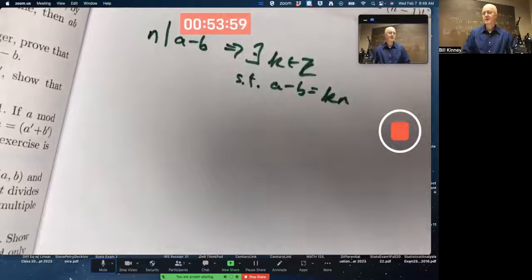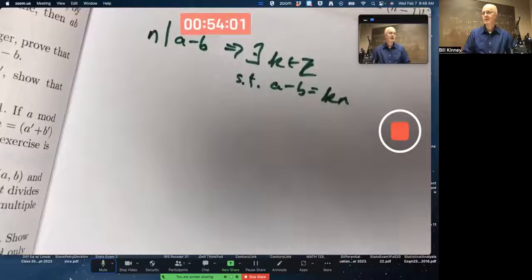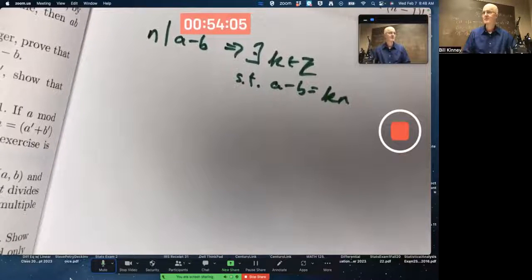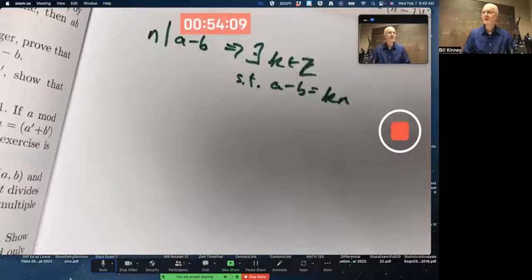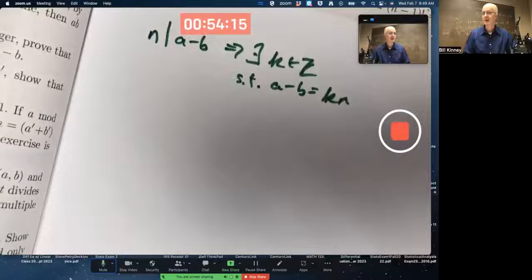You can certainly apply the division algorithm to both A and B when you divide it by N. There certainly is some quotient and some remainder for those A and B. But why are the remainders the same? That's what you're trying to prove, to prove A mod N equals B mod N. That's tricky.